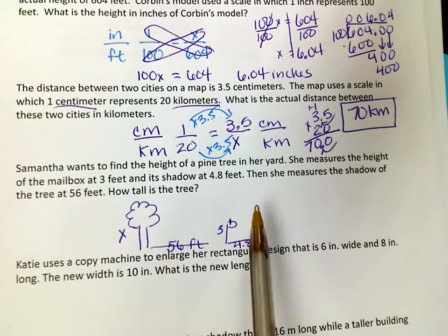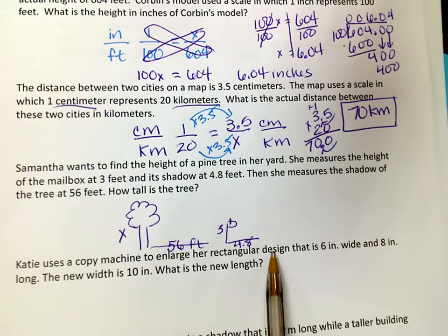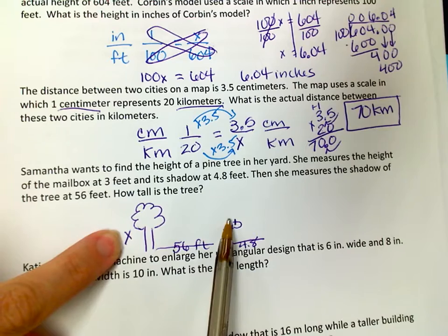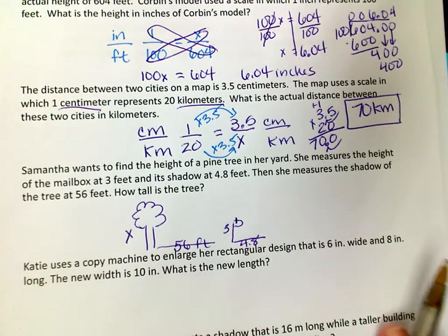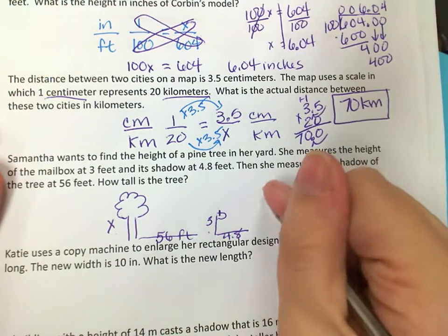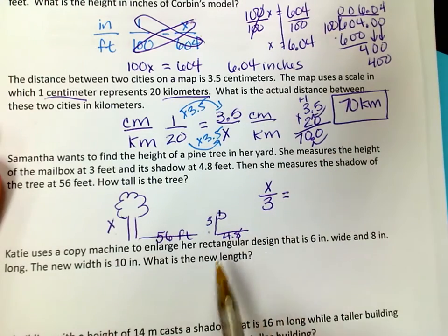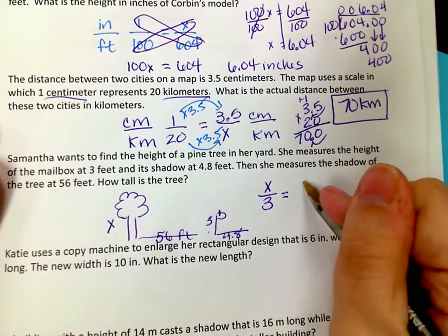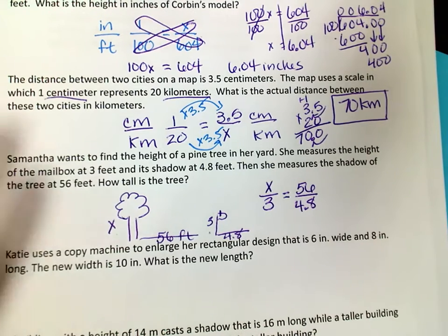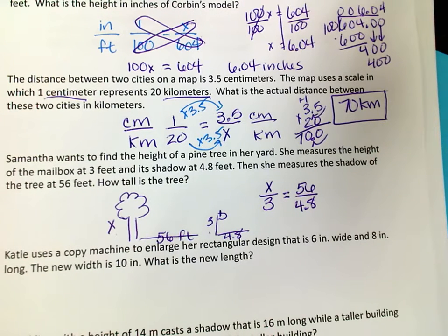You can set up the proportion as x over 56 equals 3 over 4.8, or as x over 3 equals 56 over 4.8 — as long as corresponding parts are consistently placed either side-to-side or top-to-bottom. I'll go with x over 3 equals 56 over 4.8 since x corresponds with 3. I could do cross products, but I can also find the relationship between the ratios.